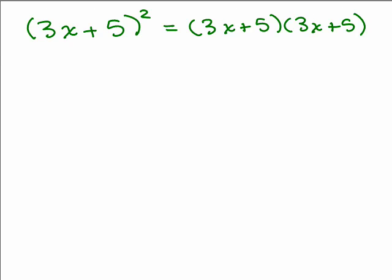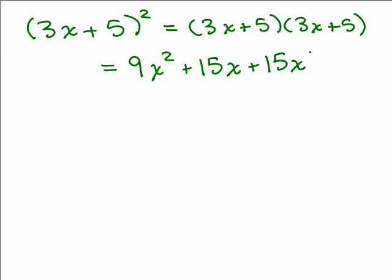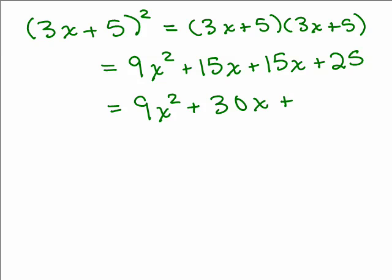Let's do another problem, writing out the meaning of squaring — you don't have to use the formula. Using FOIL on 3x plus 5 squared: 3x times 3x is 9x squared, 3x times 5 is 15x, the inner term 5 times 3x is also 15x, and the last terms multiplied together is 25. So I get 9x squared plus 30x plus 25.